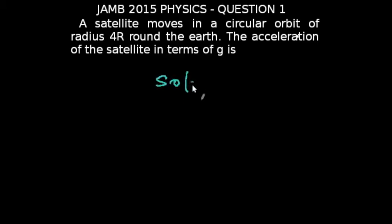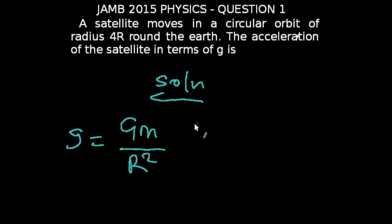This is a question on gravitational force. To solve this problem, we're going to use the formula g equals GM over R squared, where g is acceleration due to gravity, capital G is the gravitational constant, m is mass, and R is the radius of the earth.